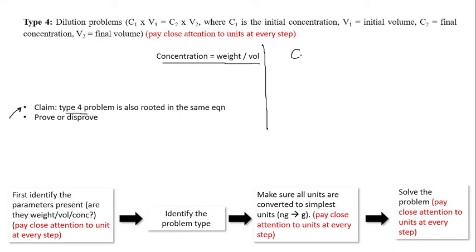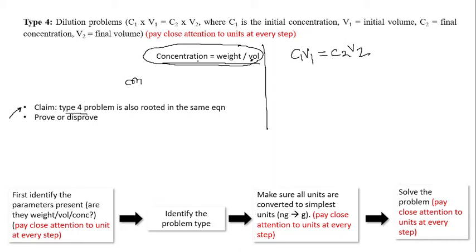Let's take the equation C1V1 = C2V2. If you take the concentration equation and rewrite it slightly — moving volume from the denominator — you multiply concentration by volume and you get weight on the other side.